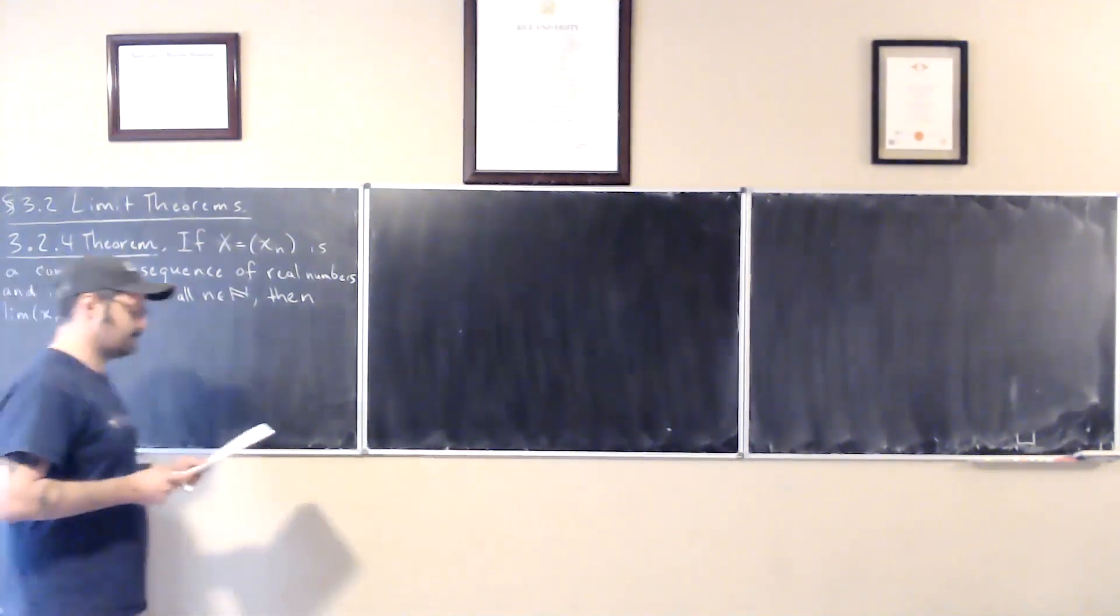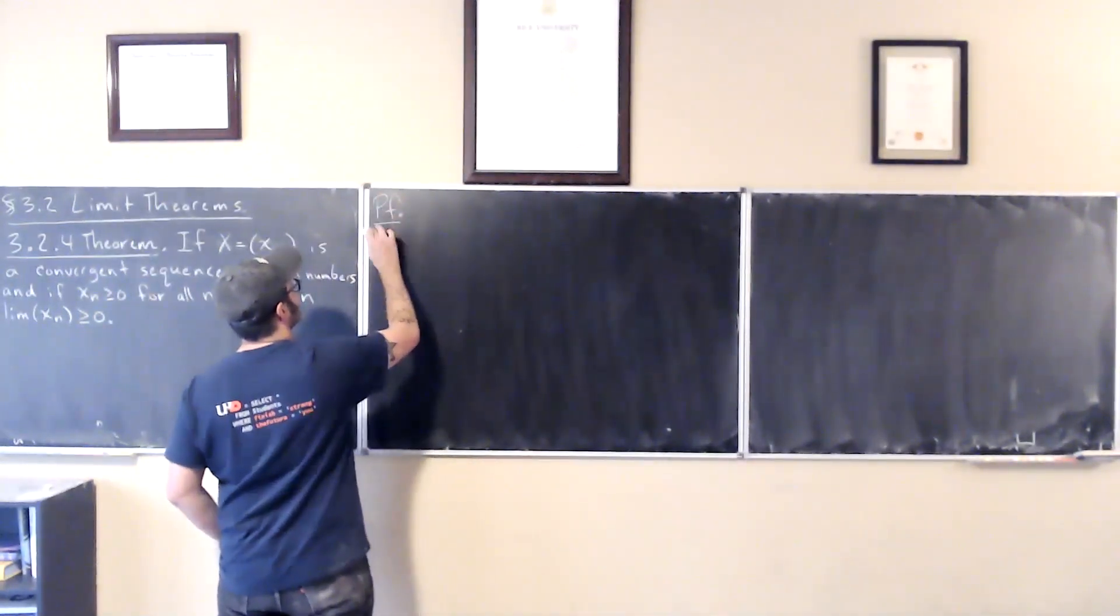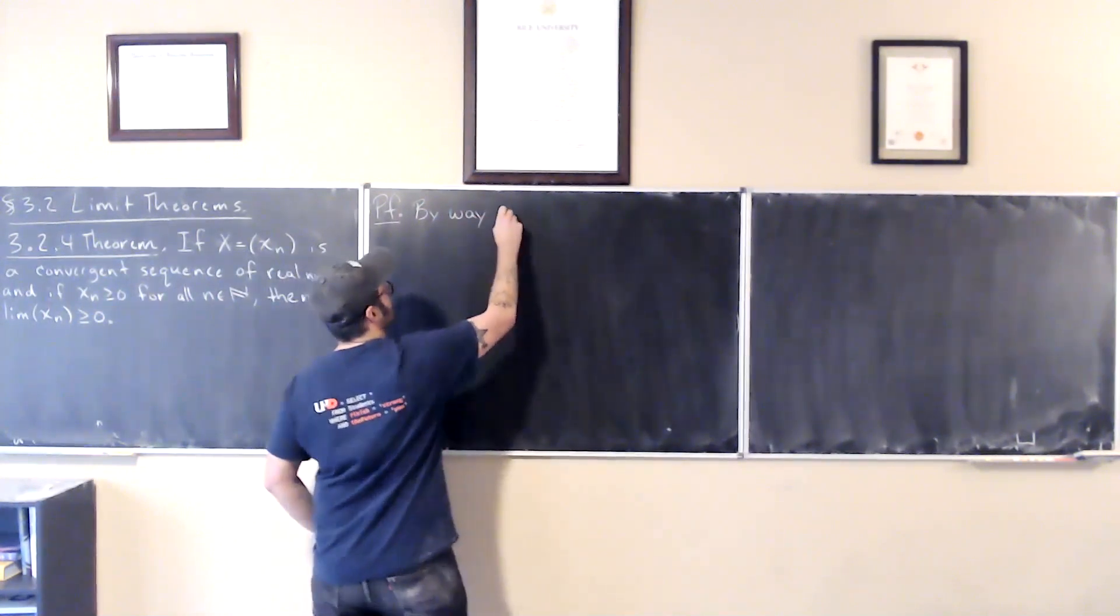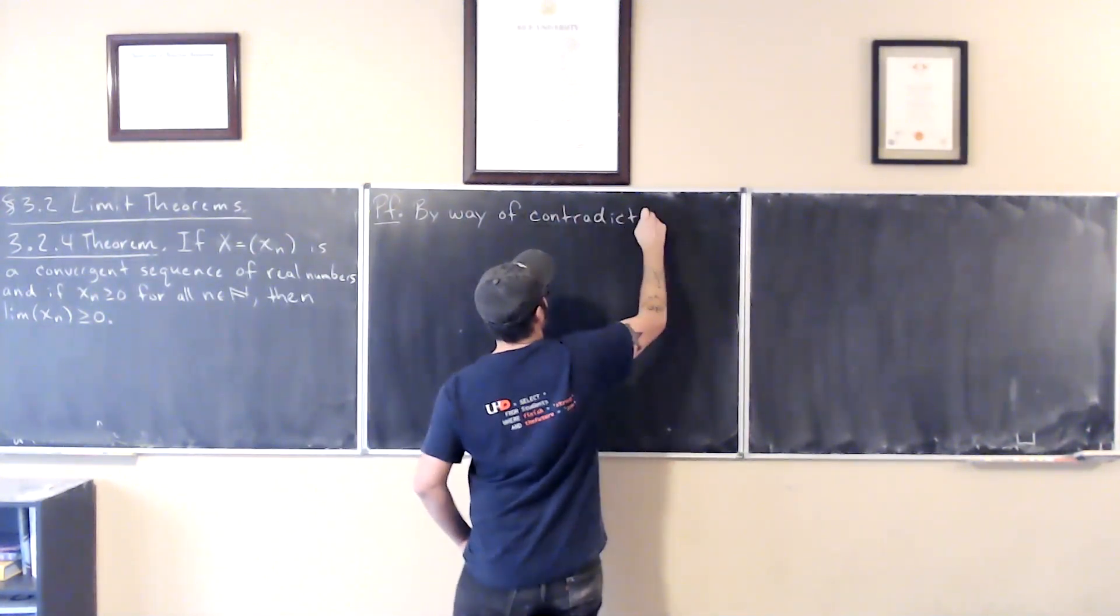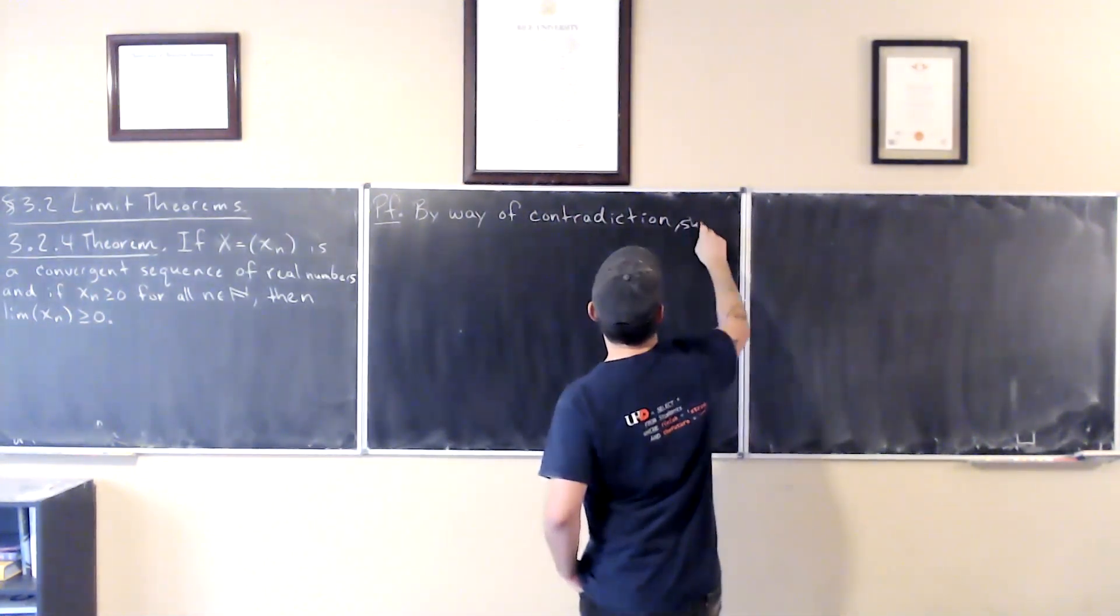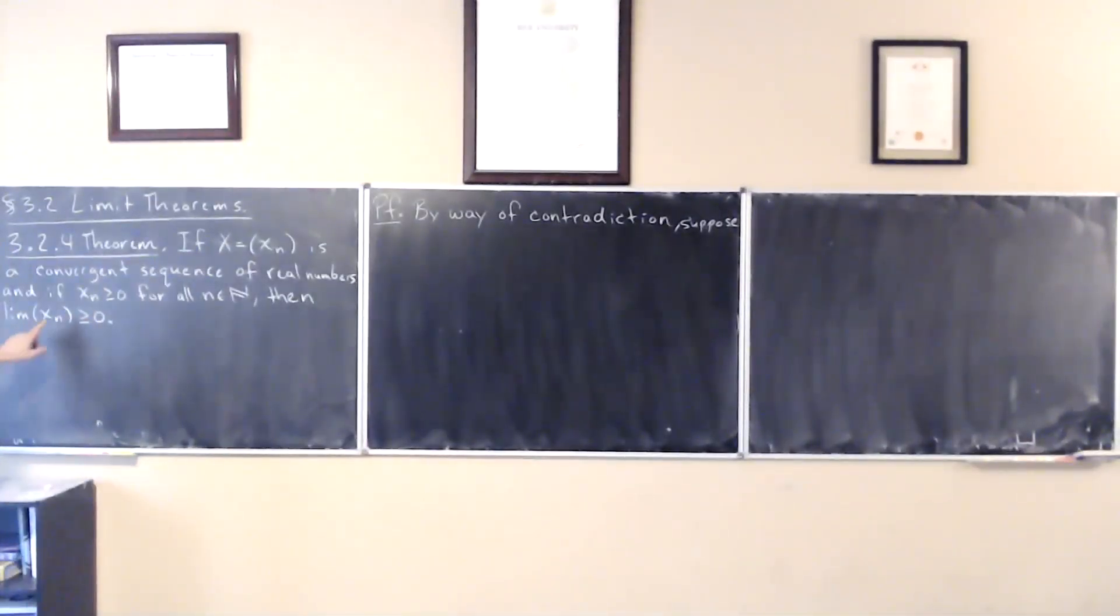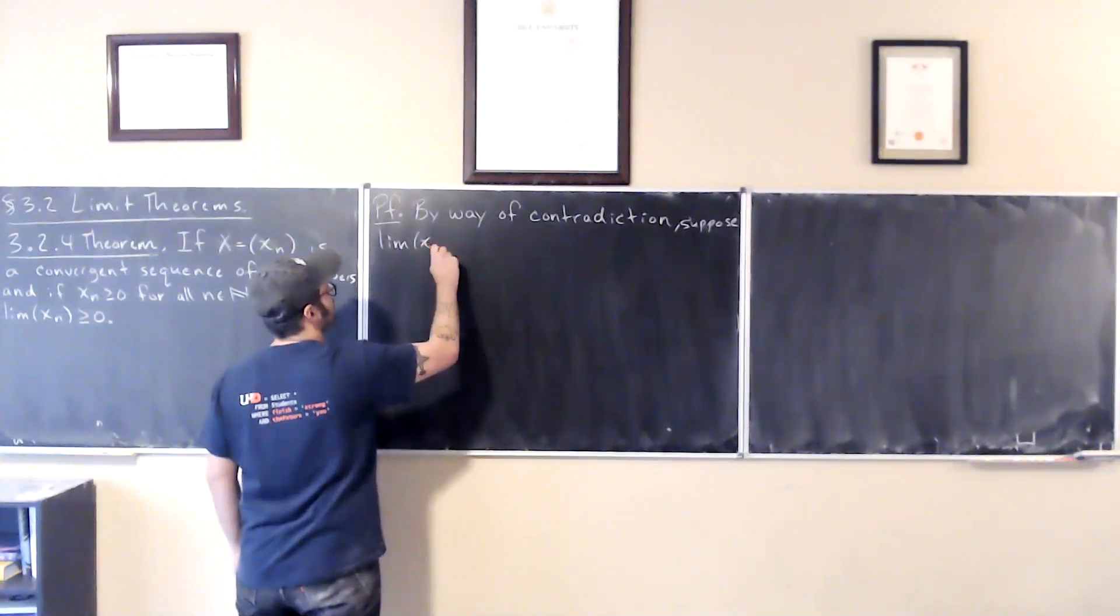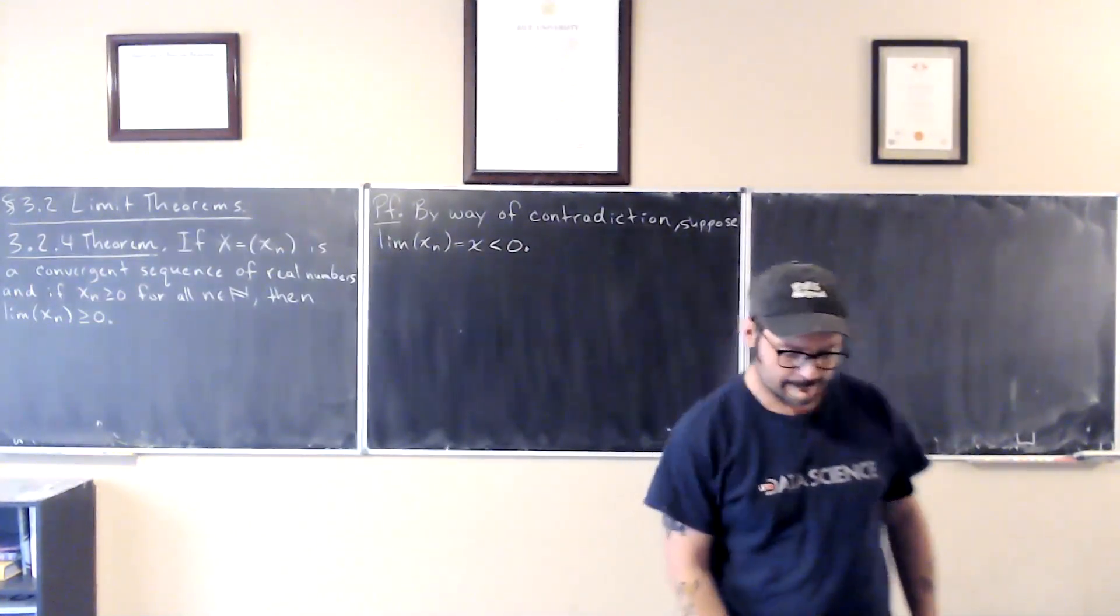Hopefully the statement of the theorem makes sense. Let's look at the proof. We're going to do this by contradiction. So let's say it converges to a limit less than zero and see what happens. So the limit of x_n equals x. Suppose that's less than zero.